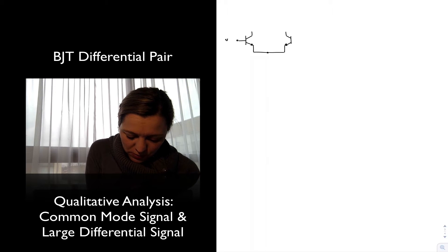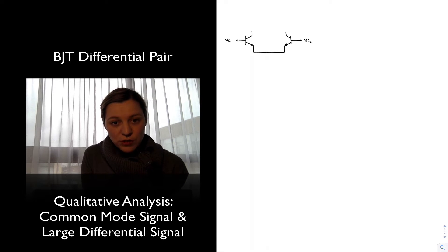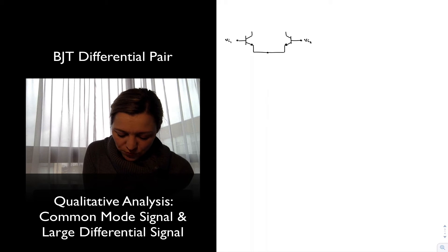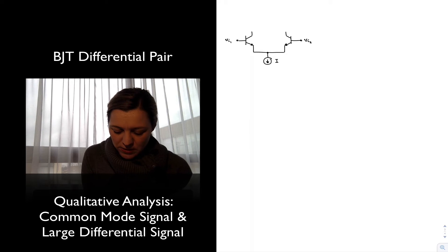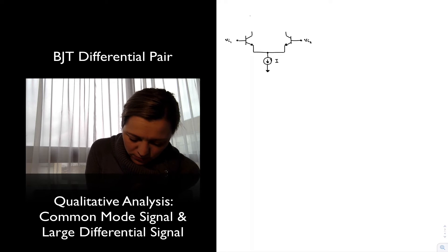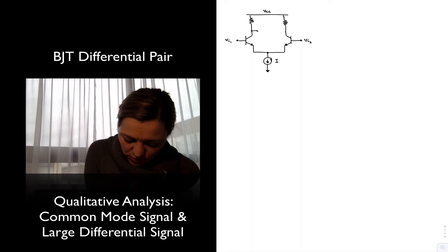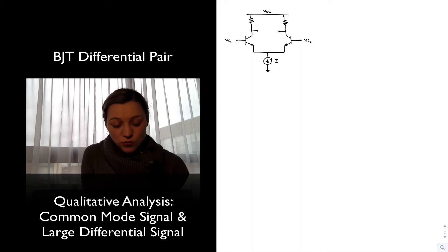The differential input is applied across the base of the two transistors, so you have Vin1 and Vin2. The differential signal will be the delta between those two. The transistors need to be biased with some current source in the most generic case, and then the output is taken at the collector of the transistors.